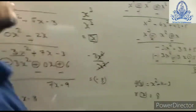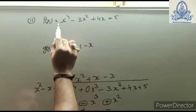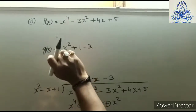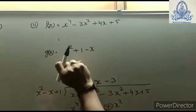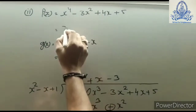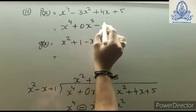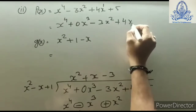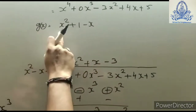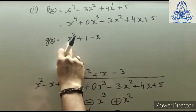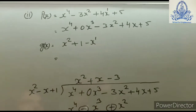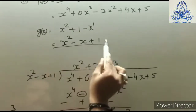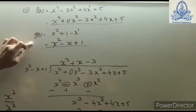Now for the next question, we observe it carefully. Here x⁴ is given, and after degree 4 there should be a degree 3 term, but it is missing, so we add that missing term with a 0 coefficient. For g(x), the highest degree is 2, and degree 1 is also given, but they must be arranged in descending sequence.